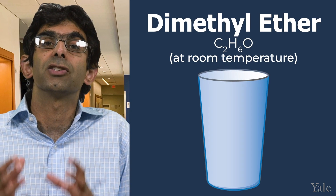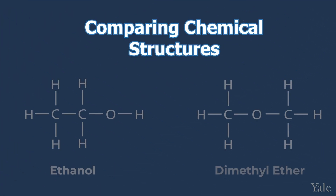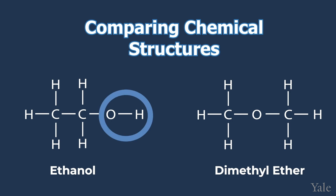The difference is caused by their different structures. These structural models show that their atoms are bonded very differently to one another. For example, ethanol has an OH bond, while dimethyl ether does not, which leads in part to them having different properties.